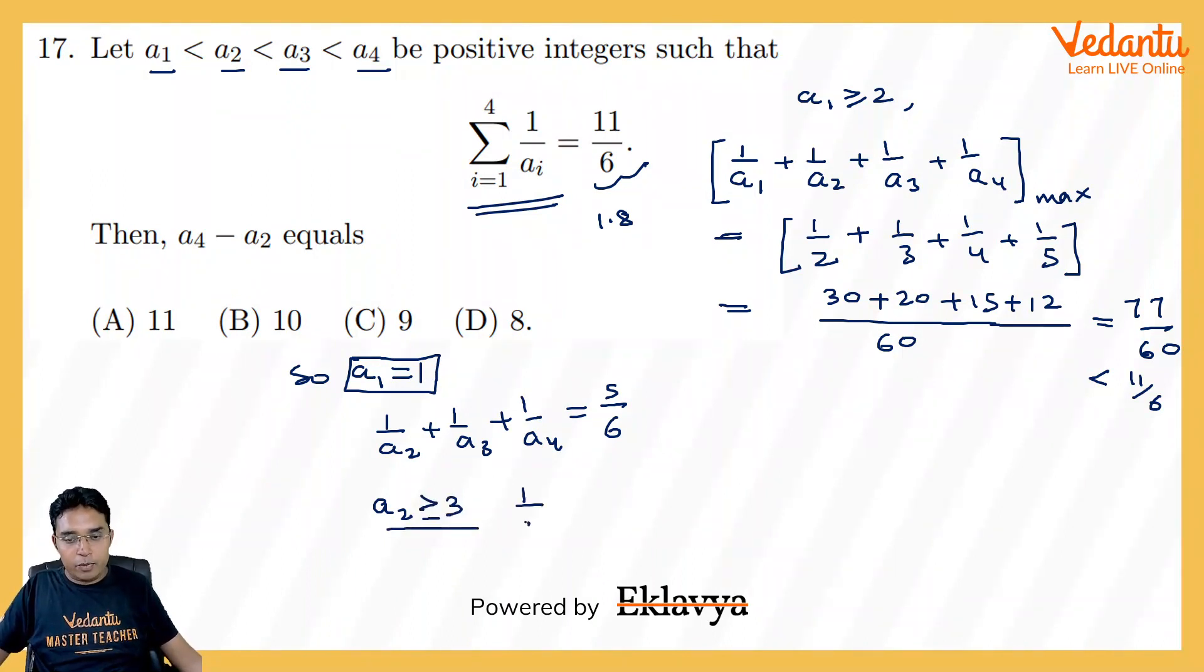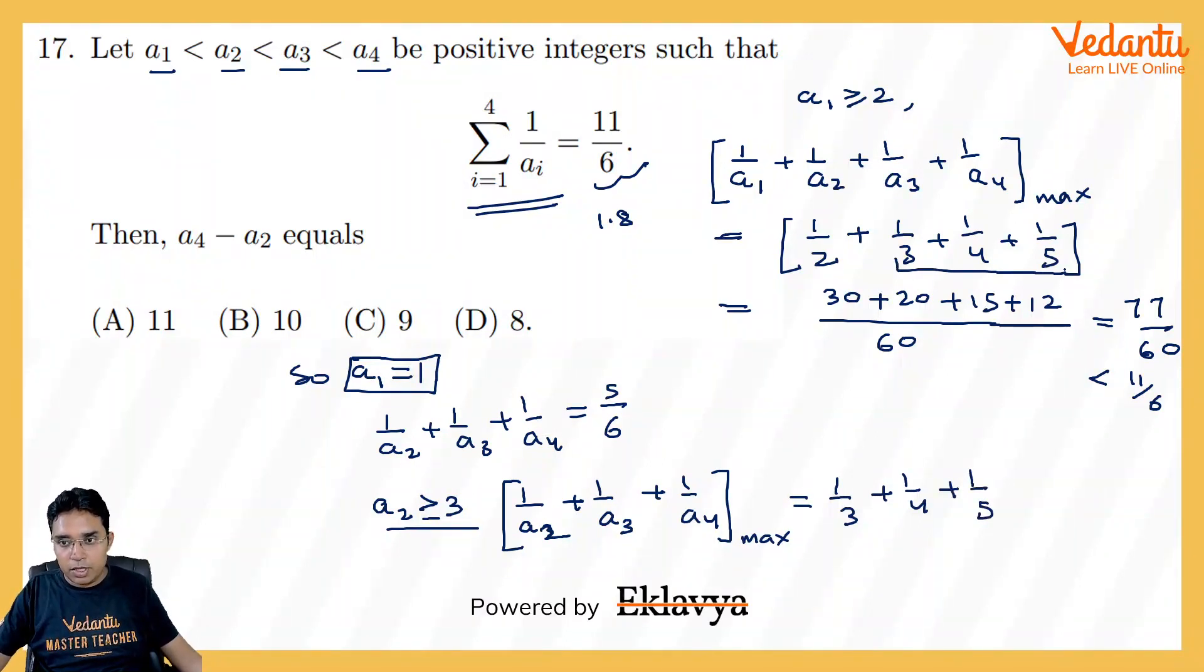I will be proceeding same way. 1 upon a3 plus 1 upon a2, 1 upon a3 and 1 upon a4. The sum of these reciprocals, the maximum possible value of this would be 1 upon a3, 1 upon a4, 1 upon a5, and you can do the similar calculation here also.